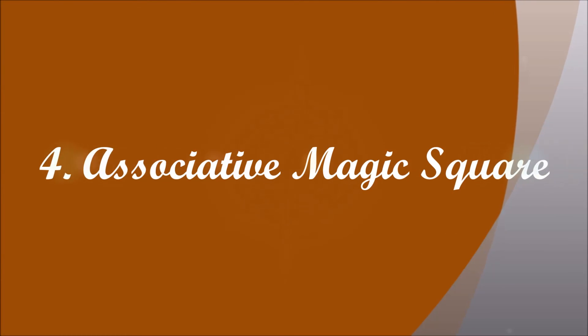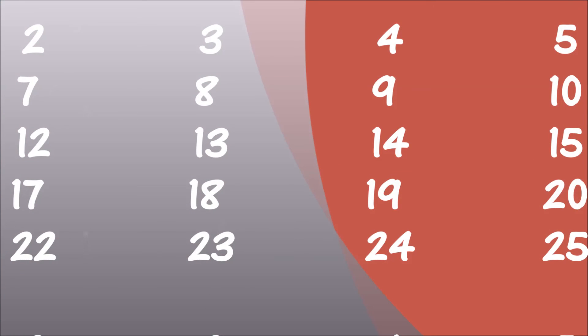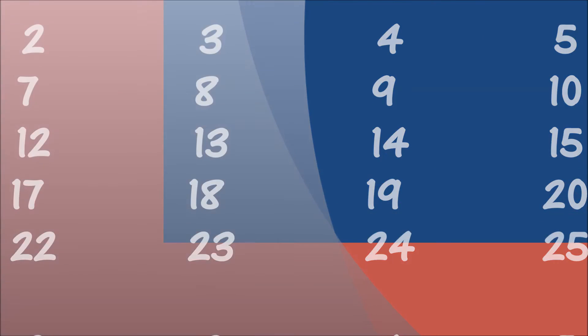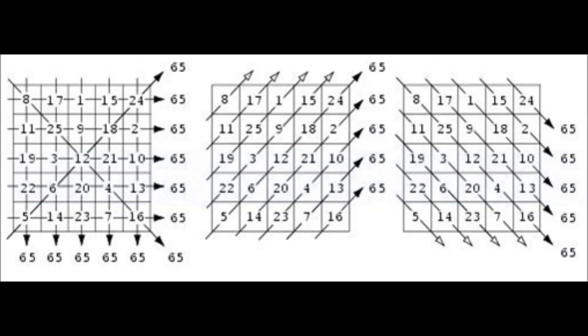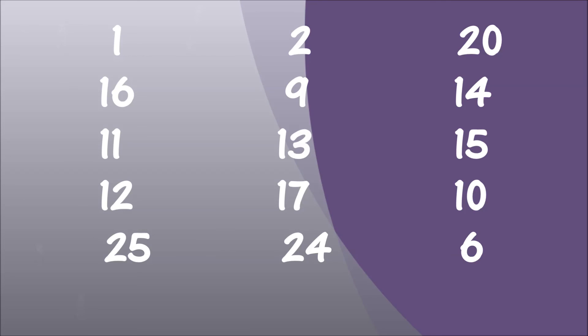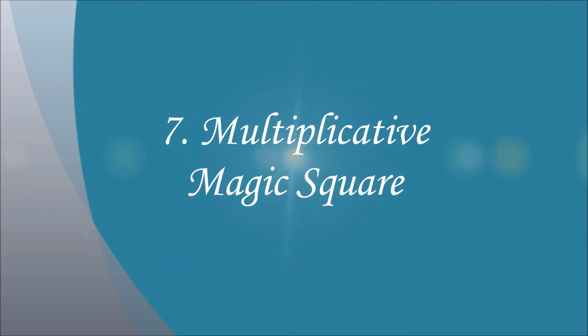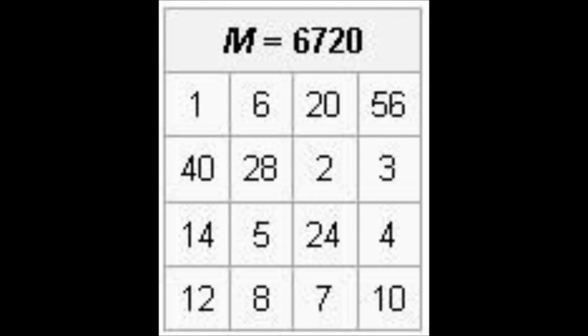Trivia magic square: semua angka pada petak diisi dengan angka yang sama. Asosiatif magic square adalah normal magic square di mana petak tengahnya adalah median dari bilangan-bilangan yang diisi. Pan magic square adalah normal magic square yang semua baris dan kolomnya sama dan penjumlahan semua diagonalnya selalu sama. Concentris magic square adalah normal magic square n×n dengan n ganjil dan n lebih besar sama dengan 5, dan persegi di dalamnya juga merupakan magic square. Multiplikatif magic square adalah magic square dengan menggunakan operasi perkalian.